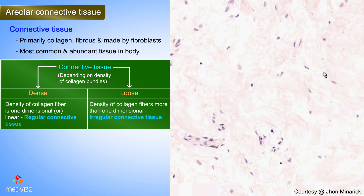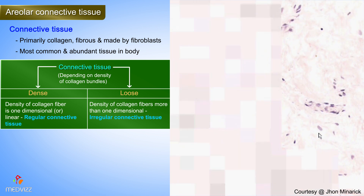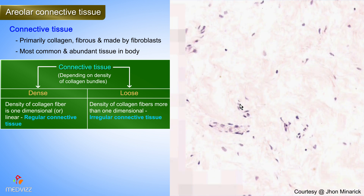Notice the waviness of these collagen fibers and how they go every which way. There are areas which appear to have a lack of fibers, and in some areas there will be adipose tissue as well. This would be another indication that we're dealing with loose irregular connective tissue, also known as areolar connective tissue — and that's exactly what we're looking at here.